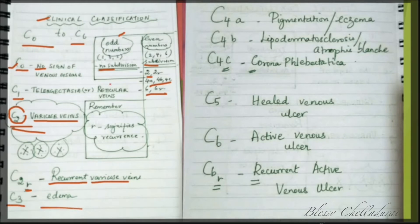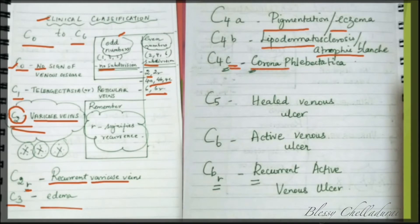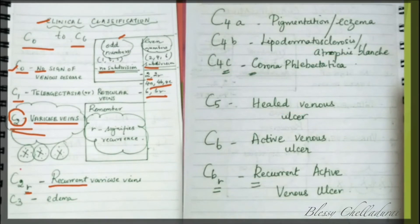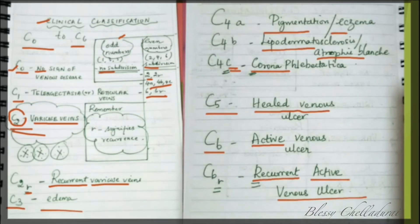C3 stands for edema. C4, being an even number, has three subdivisions: C4A stands for pigmentation or eczema; C4B stands for lipodermatosclerosis or atrophie blanche; and C4C stands for corona phlebectatica. C5 stands for healed venous ulcer. C6 stands for active venous ulcer, and C6R for recurrent active venous ulcer. The most important point to remember is that C2 signifies varicose veins.